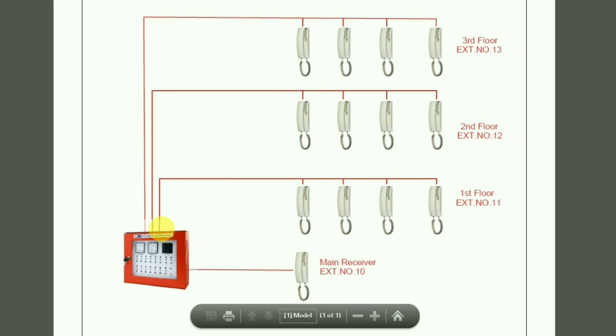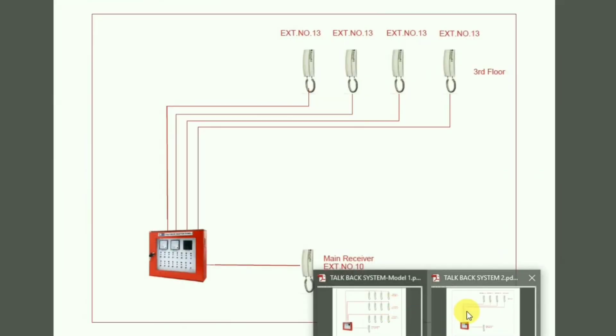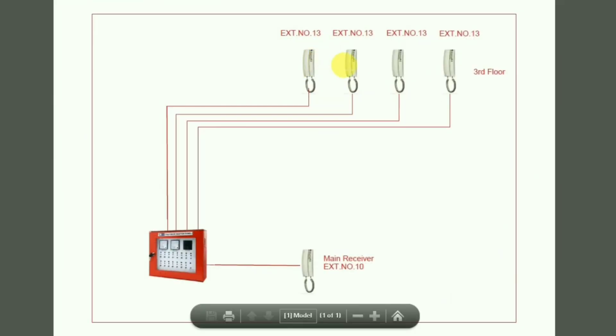At the first floor we installed four numbers of handsets and their code is 11. Then the second floor we installed another four handsets, their code is 12, and at the third floor four more handsets are installed and their code is 13. Like this you can give a different code to each handset of each floor. In that case the panel cost will be increased.